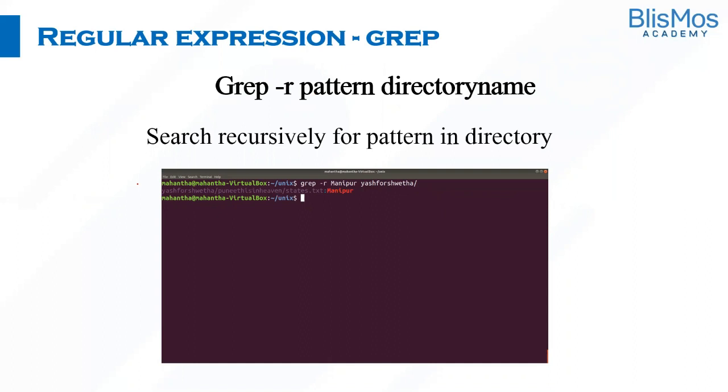So far, we did pattern search only in files. What if somebody wants to search the pattern in a directory? That's when you can use the recursive option with '-r', then provide the pattern, then provide the directory name in which you want to search for that pattern. It will recursively iterate through all the directories and search for the pattern. In this case, we're trying to search for a string called Manipur in this particular folder. This folder may have multiple files. Excellent. We'll see all of these commands as part of the hands-on.